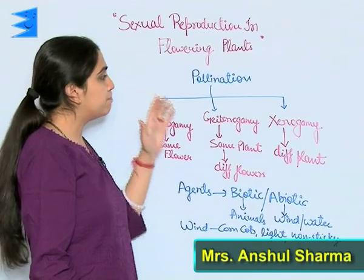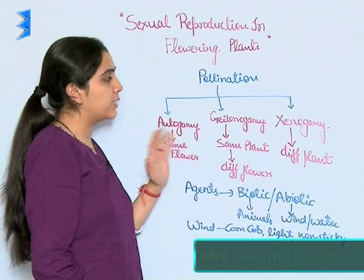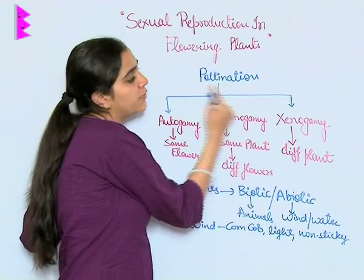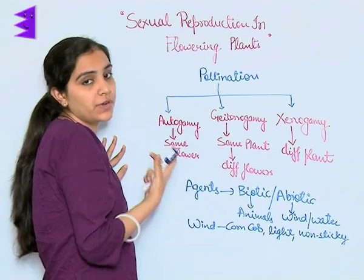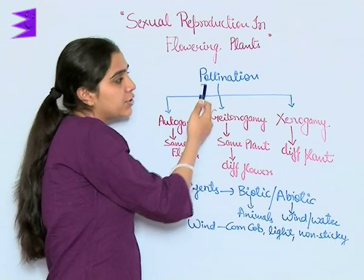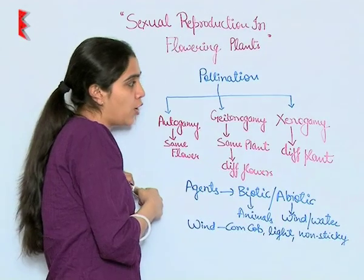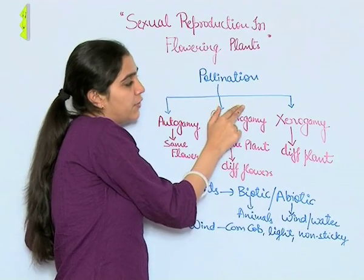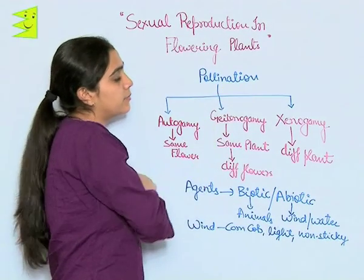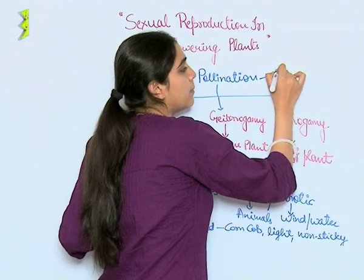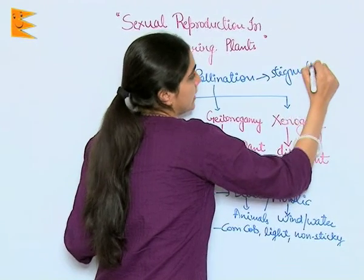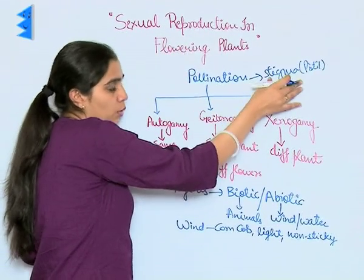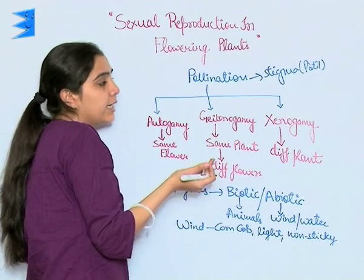Pollination. Once male and female gametophytes are both ready, the transfer of male gametophytes to the female gametophyte is necessary for fertilization. Pollination is the process of transfer of male gametophyte to the female gametophyte — specifically, the transfer of pollens to the stigma of the pistil, so that pollens can reach the ovary and the egg, and fertilization can take place.